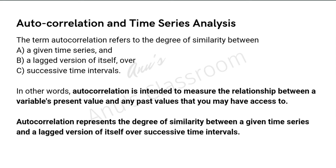Autocorrelation and time series analysis: the term autocorrelation refers to the degree of similarity between a given time series and a lagged version of itself over successive time intervals. Auto means correlation with itself — we take one dataset and try to find the correlation between its current values and the values of the same experiment from some time in the past. It is intended to measure the relationship between a variable's present value and any past value we may have access to.